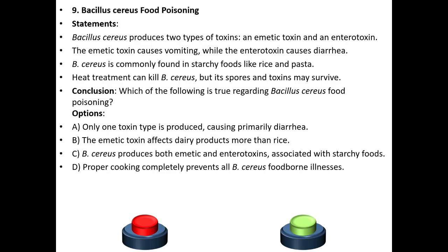Ninth question: Bacillus cereus food poisoning. Statements: Bacillus cereus produces two types of toxins: an emetic toxin and an enterotoxin. The emetic toxin causes vomiting while the enterotoxin causes diarrhea. Bacillus cereus is commonly found in starchy foods like rice and pasta. Heat treatment can kill Bacillus cereus but its spores and toxins may survive.